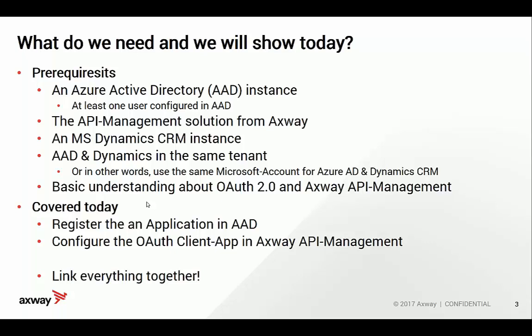What we will cover in this video today is that we are going to register an application in Azure Active Directory — an OAuth application — and we will configure the other side of that OAuth application, the client app, in the API management solution from Axway. Finally, we link everything together so that the API is in your API catalog and can be consumed by a client, and then we will see how it works.